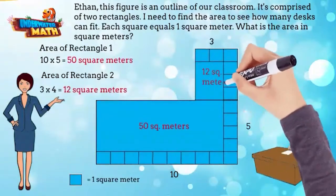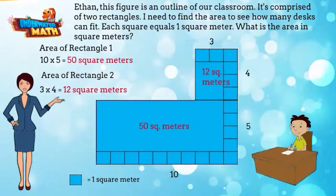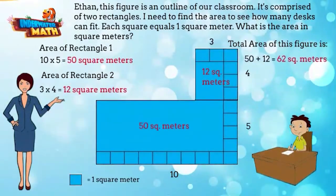Now that I have the area for both rectangles, I add them together. 50 plus 12 equals 62. The area of this figure is 62 square meters. How did I do, Mrs. Peninickel?